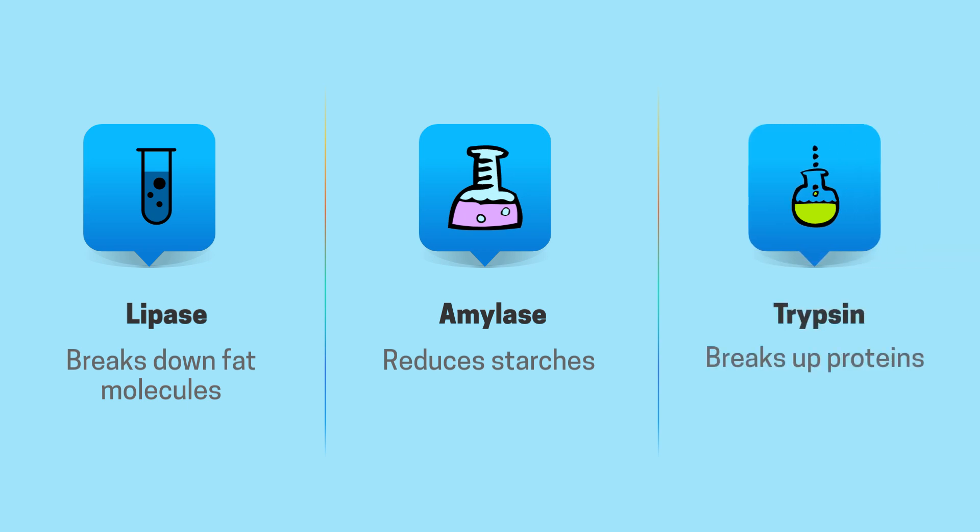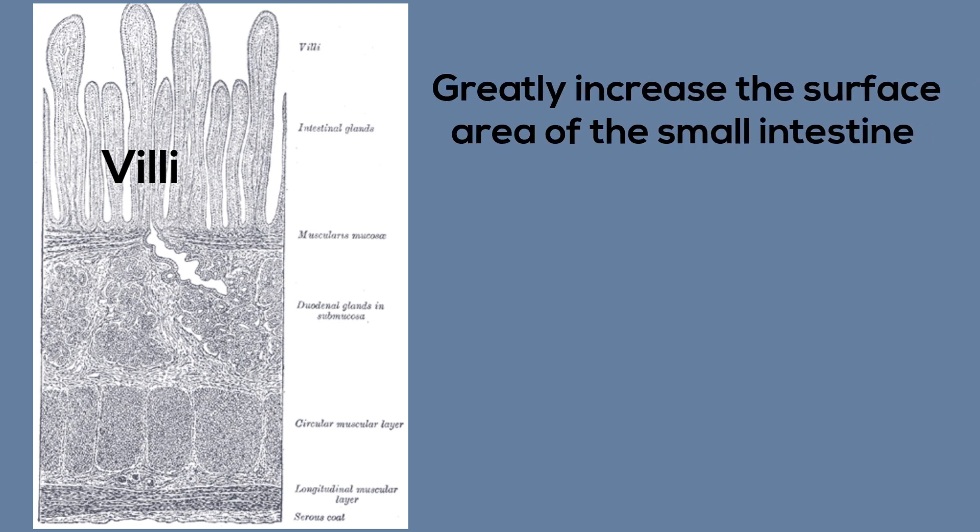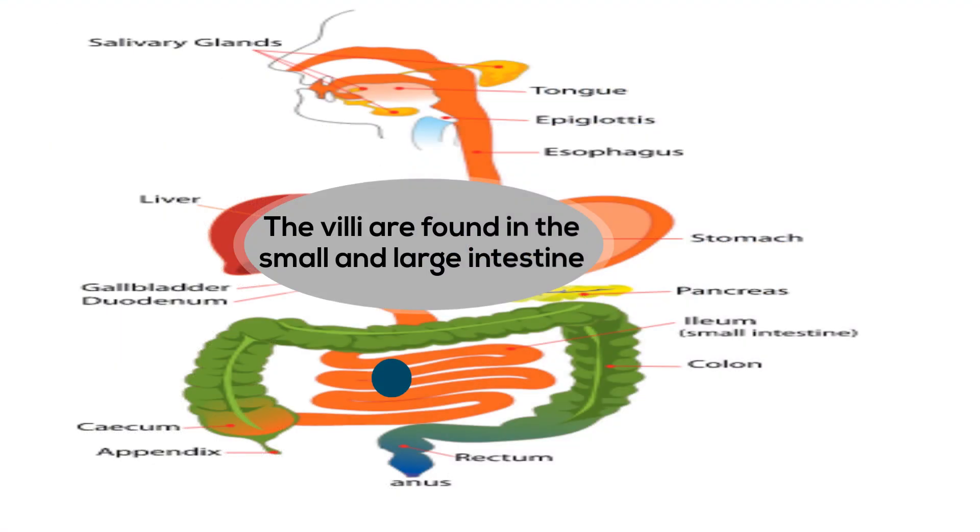The walls of the small intestines are lined with folds and tiny finger-like projections called villi. This increases the surface area of the small intestine. Each villus contains capillaries and a lymphatic vessel. Nutrients diffuse through the thin walls of the villus and into either the capillaries or lymphatic vessels.